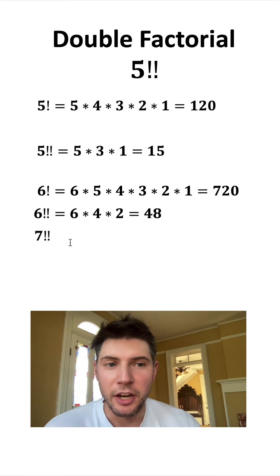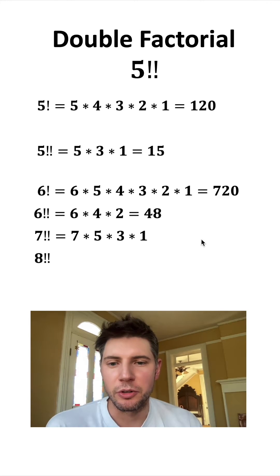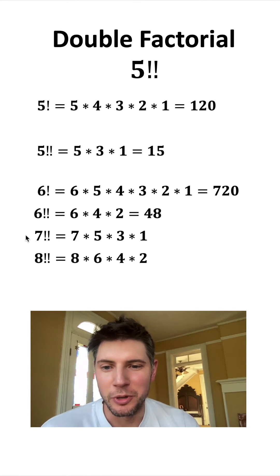So 7 would be all the odd numbers from 7 to 1 being multiplied. And 8 double factorial would be all the even numbers from 8 down to 2 being multiplied. So that's how double factorial works.